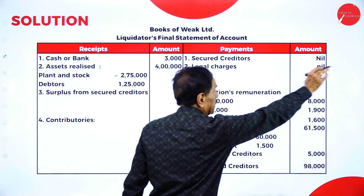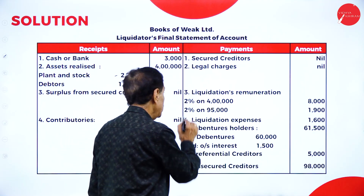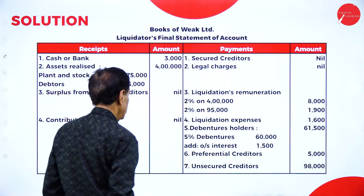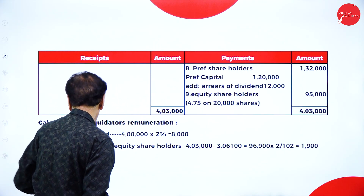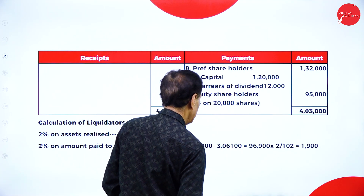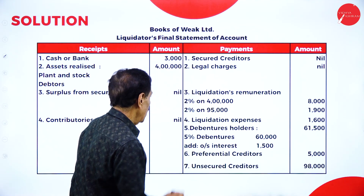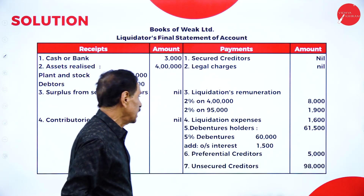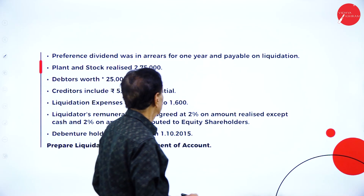Coming to the payment format: no secured creditor, no legal expenses. Liquidator's remuneration: 2% on Rs.4,00,000 = Rs.8,000. Then 2% on amount paid to equity shareholders — shown in the working note. Liquidation expenses: Rs.1,600. Debenture value: Rs.60,000, plus interest.